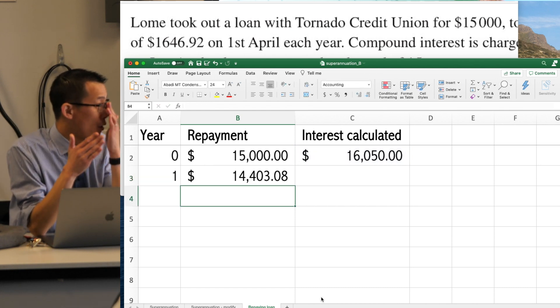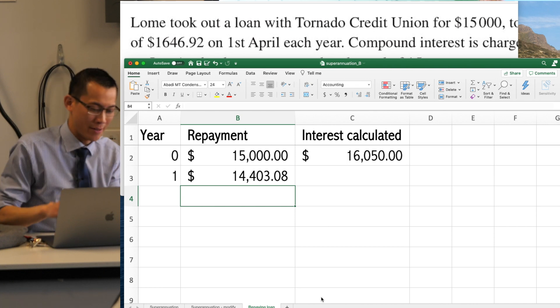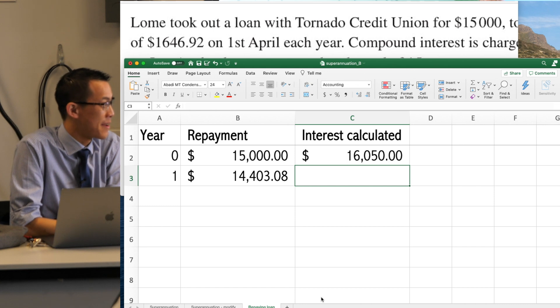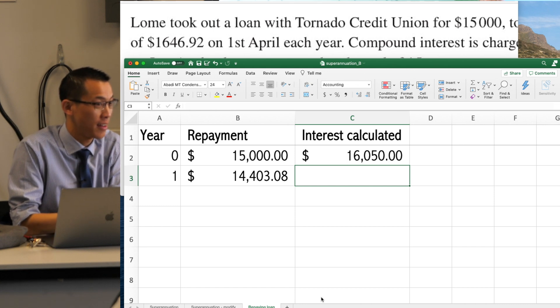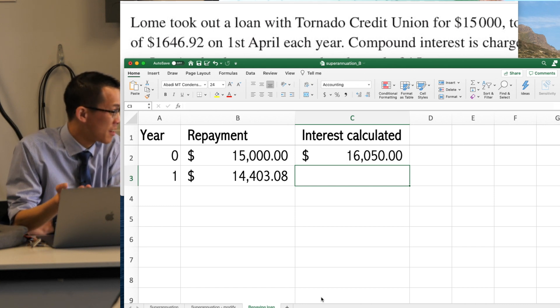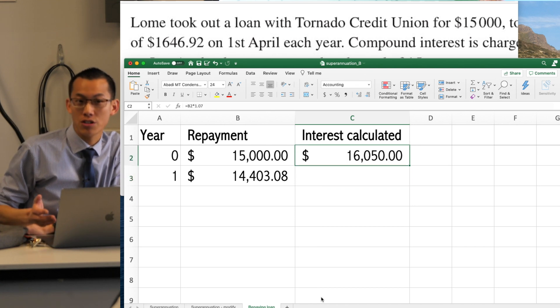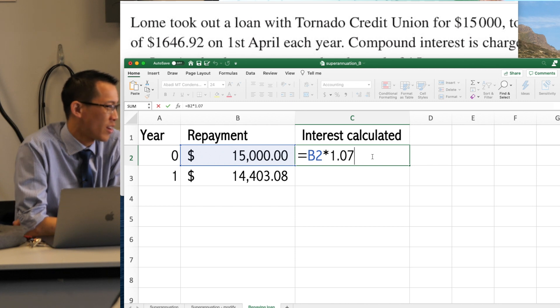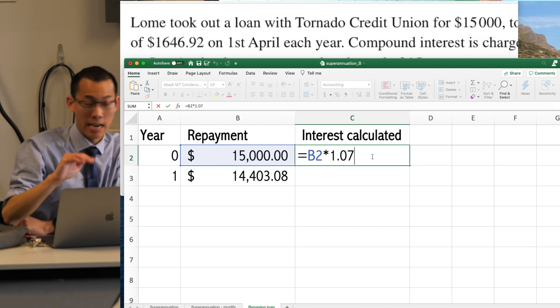So this is how much I owe after having made my first repayment. But what does the bank do? Because they're not in this for charity, they're in this to make a profit. They're going to charge us interest, right? Now thankfully we already know how to charge interest. It's in this cell right here. So I don't need to retype this. I'm just going to copy it and I'm going to paste it down.